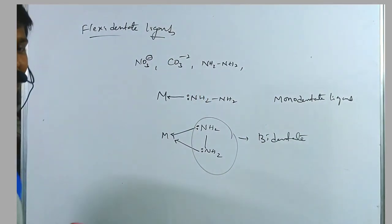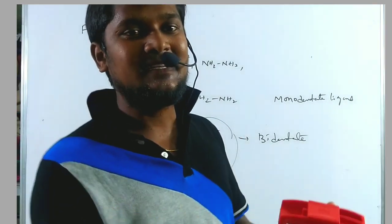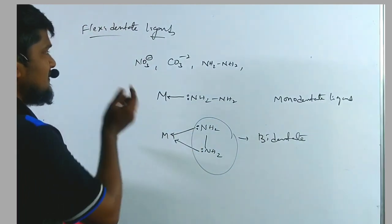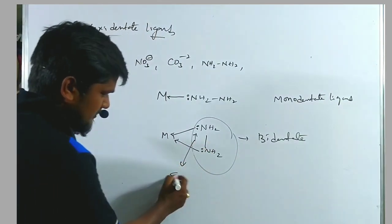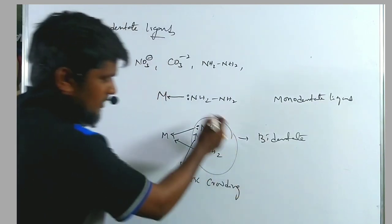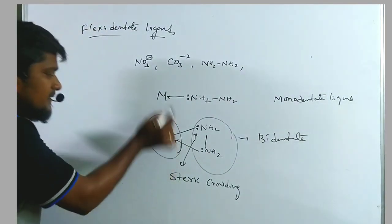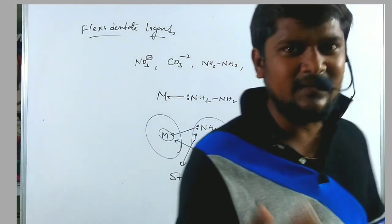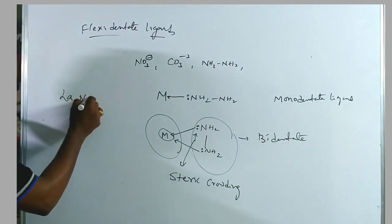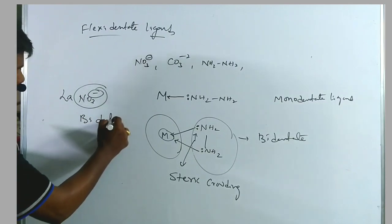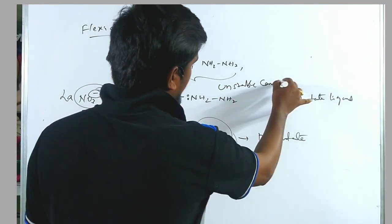A ligand can act as both mono- and bidentate, or tri- and tetradentate. Such ligands are known as flexidentate ligands. Generally, three-membered rings are unstable due to steric crowding, so all these are unstable complexes with transition metals. However, when the metal size increases — in the case of lanthanoids or actinoids — these ligands act as bidentate ligands.